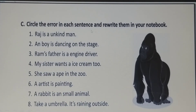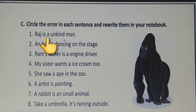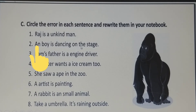Circle the error in each sentence and rewrite them in your notebook. This is your task. You have to highlight and circle the errors which come in a sentence and rewrite in your notebook. For example, if a wrong article is used in front of a vowel sound, circle it. 'And boy is dancing on the stage' — the article here is wrong, so we have to circle it. The rest of the others you have to do and rewrite in your notebook.